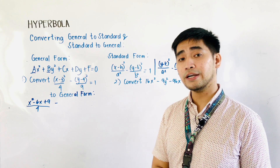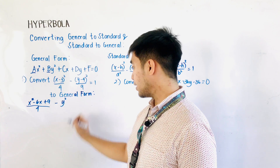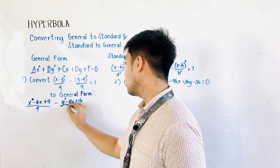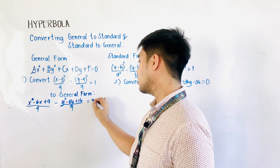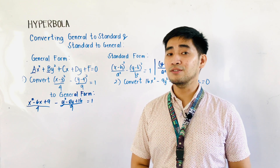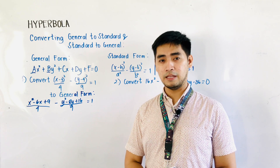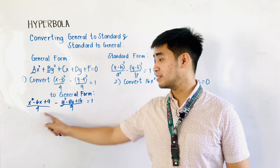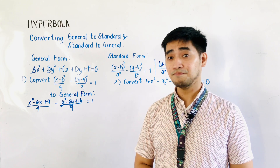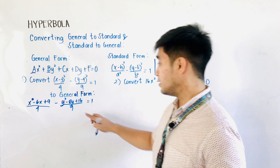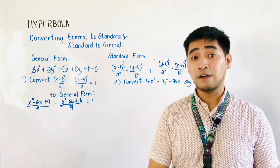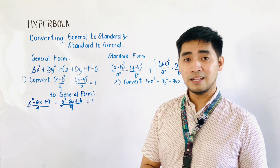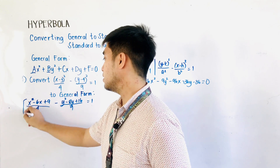Next, we expand (y−4)² to get y² − 8y + 16, so the equation becomes (x² − 6x + 9)/4 − (y² − 8y + 16)/9 = 1. The next step is to identify the least common denominator, because the general form has the right side equal to 0 and we want to eliminate fractions. The LCD of 4 and 9 is 36.